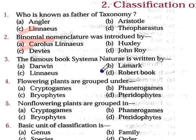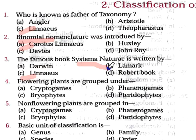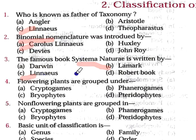Question number 3: The famous book 'Systema Naturae' is written by — Option A: Darwin, Option B: Lamarck, Option C: Linnaeus, Option D: Robert Hooke. The correct answer is Option C. Linnaeus wrote the famous book called Systema Naturae, in which he wrote about animals and plants and tried to classify them. Carl Linnaeus gave an initial classification, that is why he is the father of taxonomy. He also gave binomial nomenclature and wrote Systema Naturae.